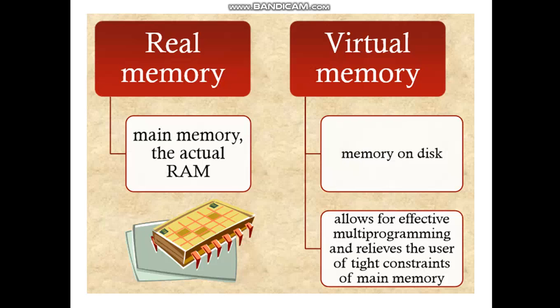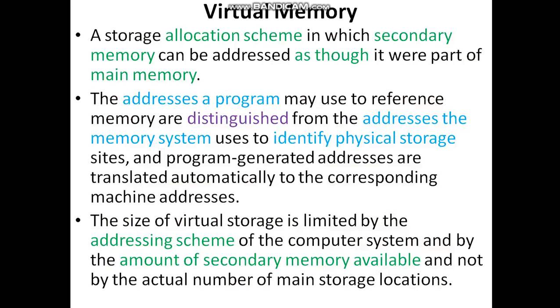For example, in the case of multiprogramming, main memory will be frequently used by the system with requests from the user. There is a tight constraint with respect to the main memory. In order to avoid that, we are going to use virtual memory. Virtual memory is an allocation scheme where any secondary memory can be addressed as though it is going to act like main memory.